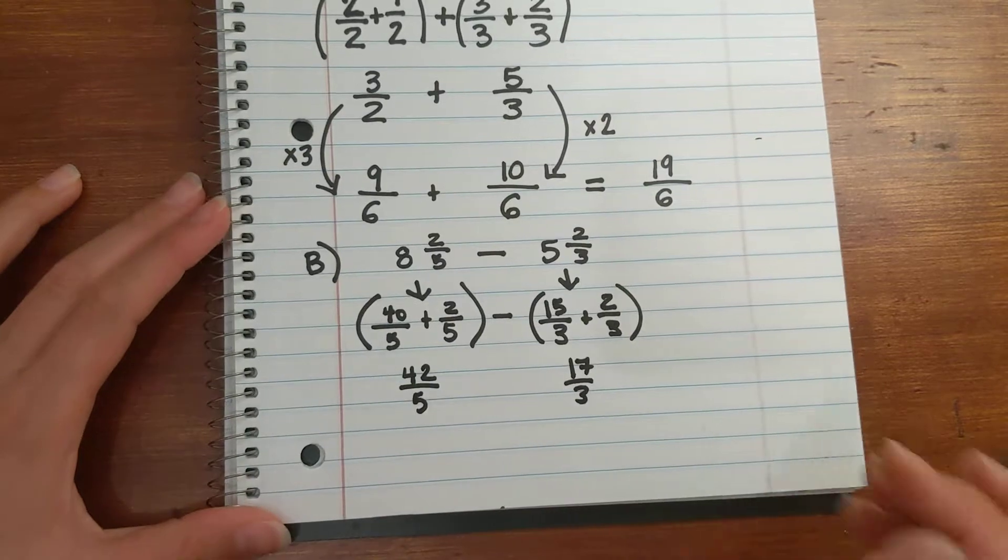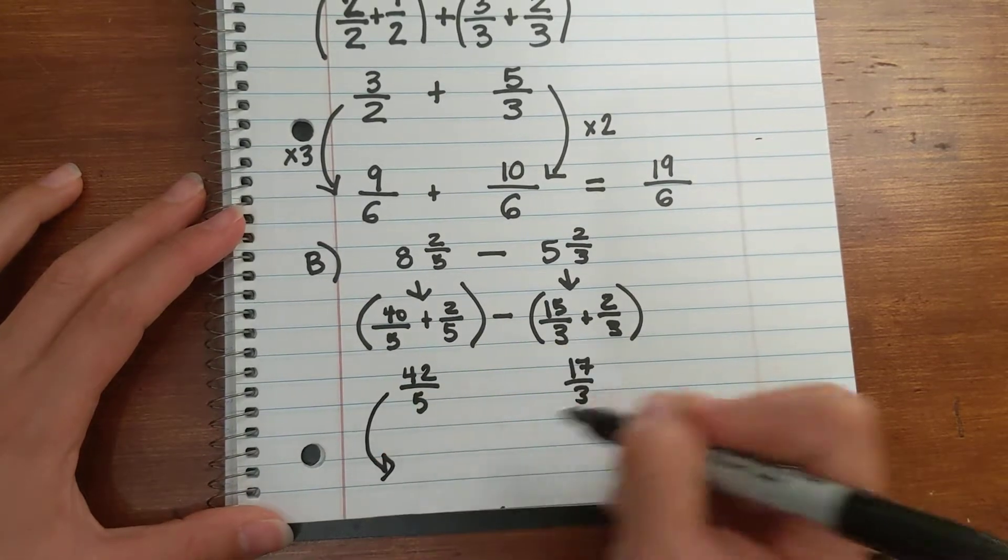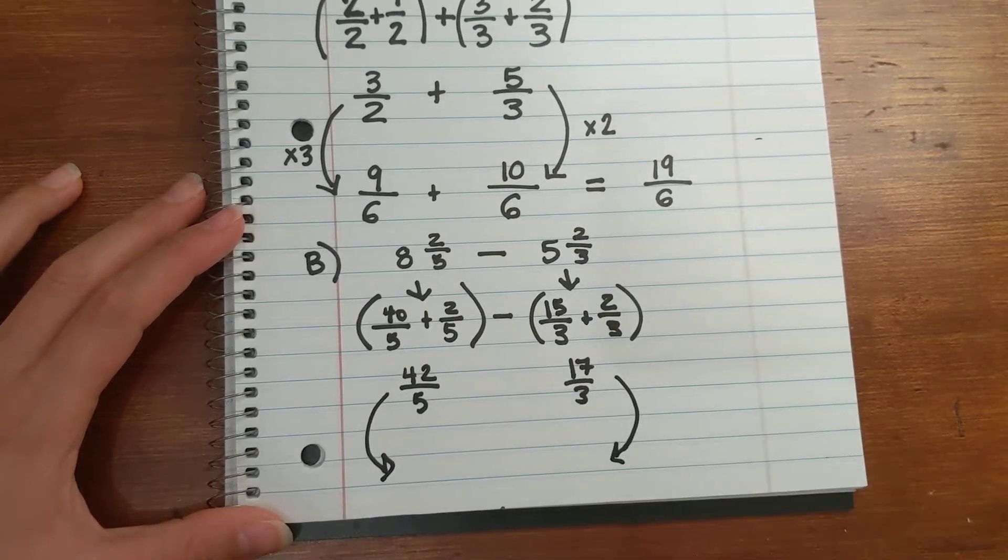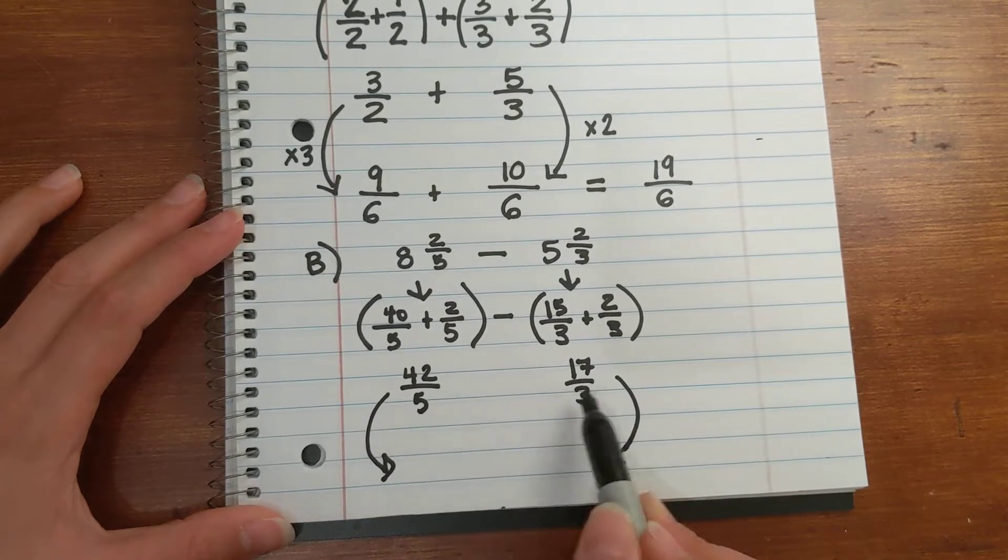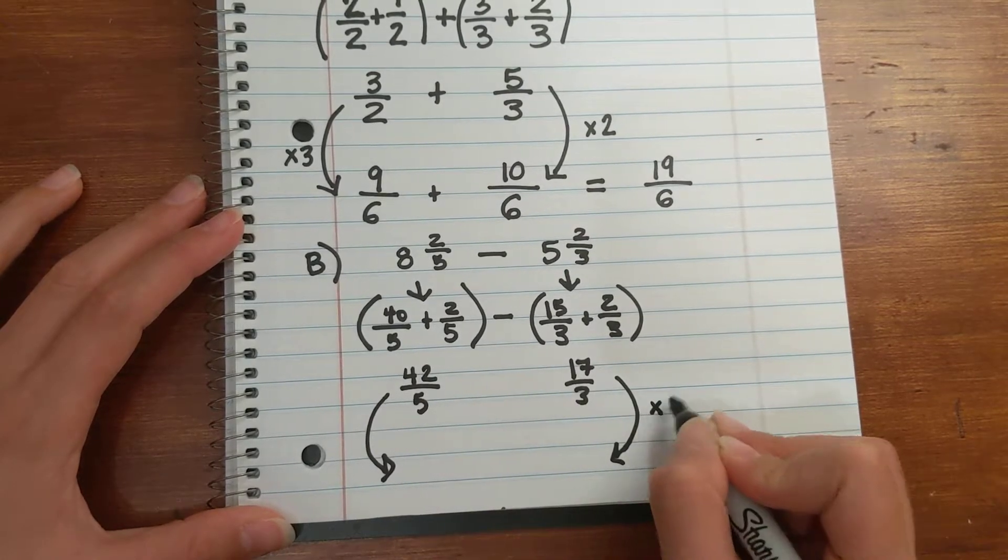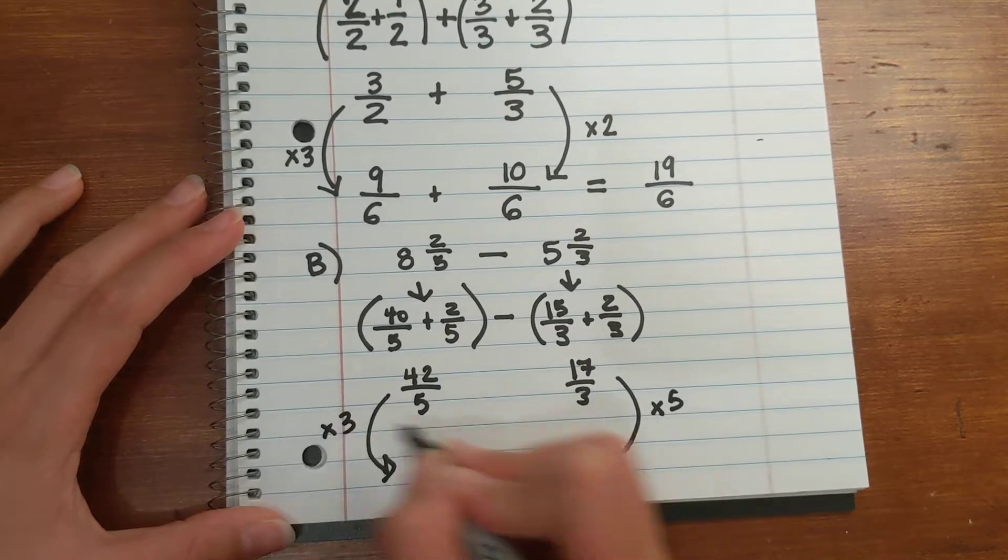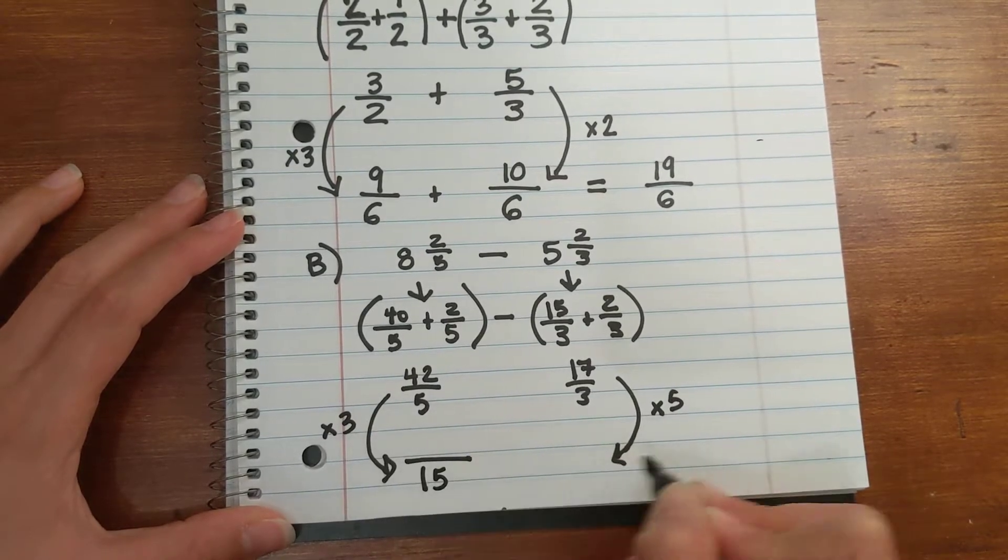I'm running out of room, sorry, a little bit smaller. I have to find that least common denominator, and using my multiples, I know the common multiple is 15. So multiply by 5, multiply by 3, 15 as the denominator.